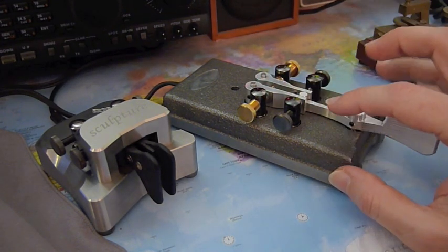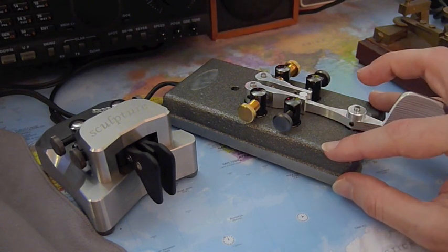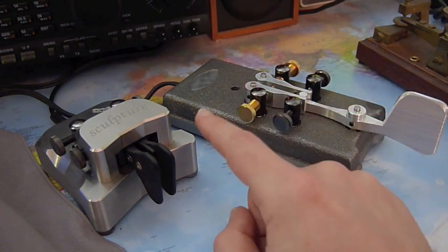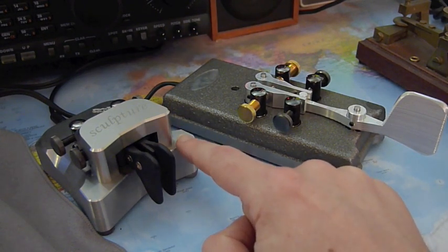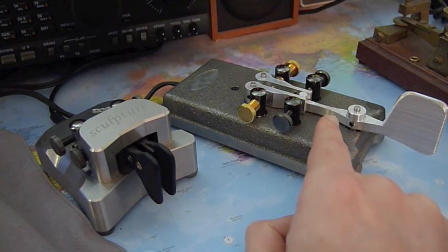This is a fully working prototype. It will be mounted on the base of the Begali sculpture, and it will probably have as an option the carbon fiber arm.